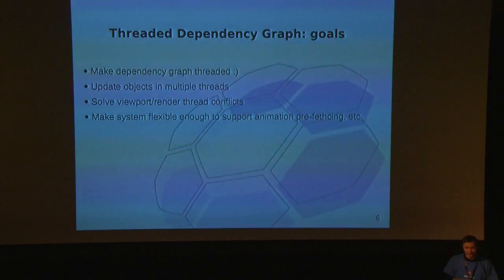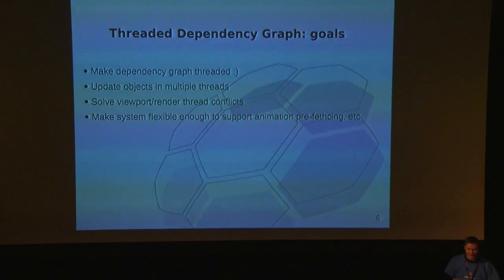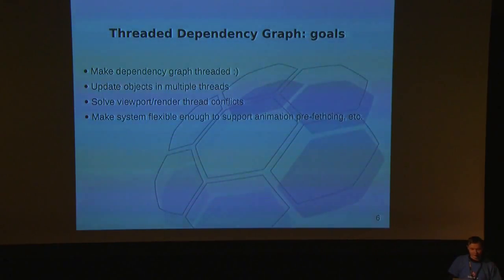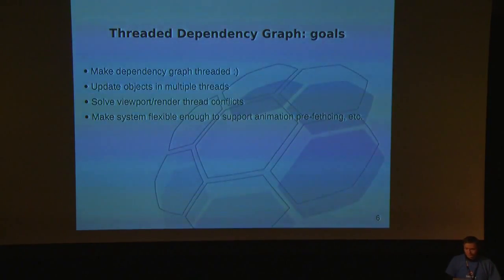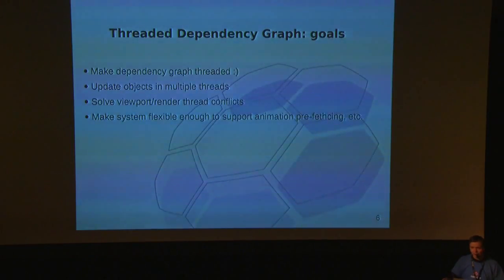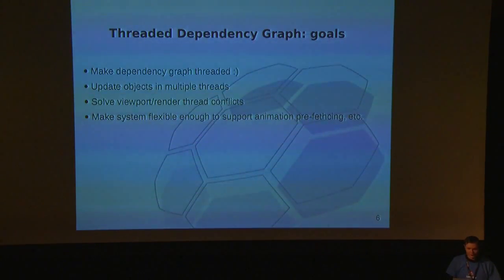Currently the dependency graph is single-threaded, so all objects are updated in a single thread, which is kind of slow. My goal is to make the dependency graph threaded. The project divides into separate topics. First is to make objects updated in separate threads — you can update independent objects in separate threads. Another major topic is to make it stable to render a scene while you are editing it. More long-term goals include animation prefetching, different windows having different times, which might be useful for animators.